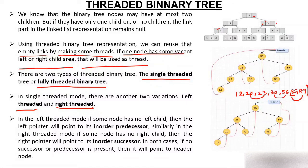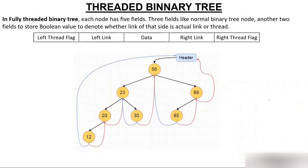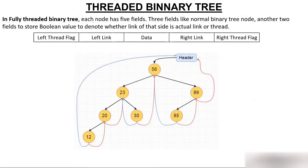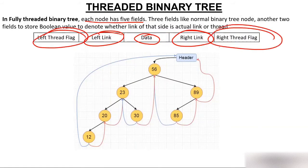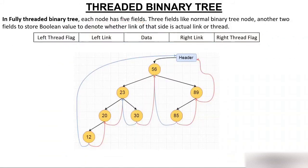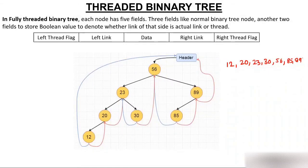Now we'll understand fully threaded binary tree. In a regular binary tree, a node has three parts: data, left child pointer, and right child pointer. In a fully threaded binary tree, a node has five fields: data, left child pointer, right child pointer, left thread flag, and right thread flag. If both left and right pointers of a node are free, it will keep in-order information in both. The in-order traversal of this tree is: 12, 20, 23, 30, 56, 85, 89.